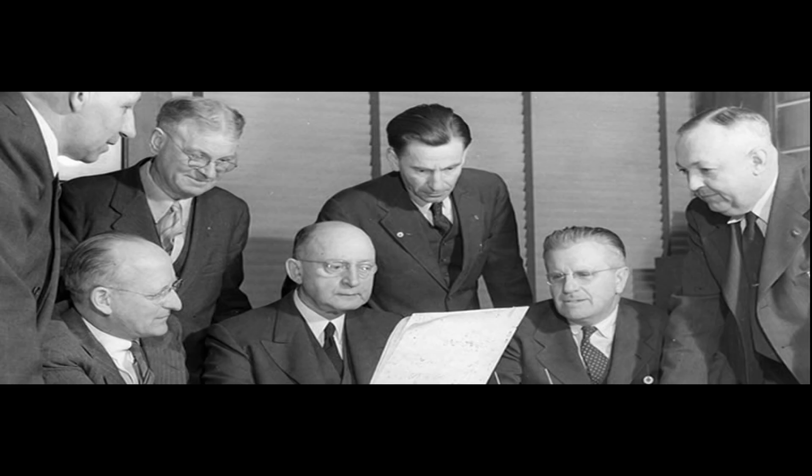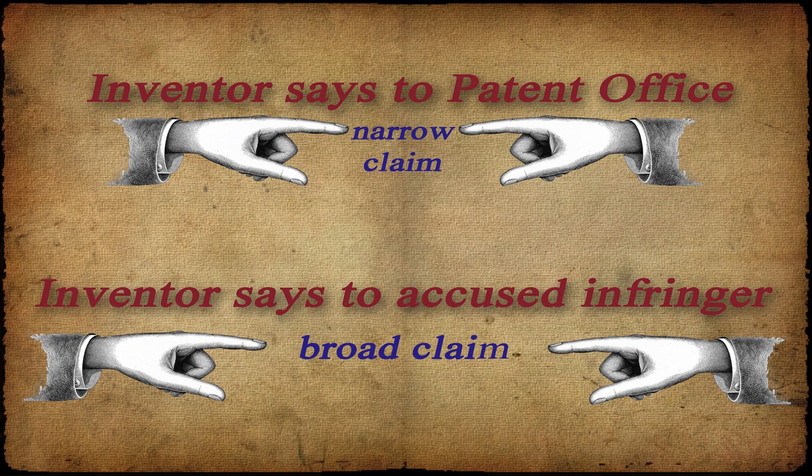Any assertion of the patent will involve a review of the file history by both sides. One thing that attorneys look for in a file history is called file history estoppel. In short, this is when an inventor takes a position that the patent claim covers a narrow invention when getting the patent, and then later claims a broader interpretation when enforcing the patent.